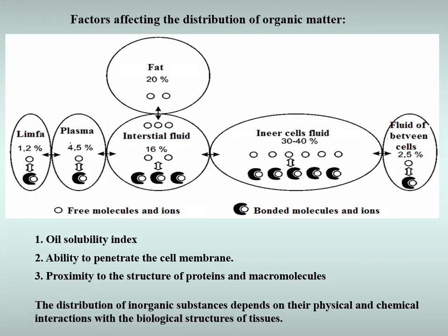Depending on the type of bond between the toxin and receptors, different methods are used in chemical toxicological analysis to isolate toxins from biological material. The method of decomposition of organic substances with mineral acids with oxidizing properties is used to isolate metal poisons combined with covalent bonds. To isolate poisons that combine with ionic and other less stable bonds with receptors, the methods of extracting biological material with water, acidified water, or acidified alcohol are used.